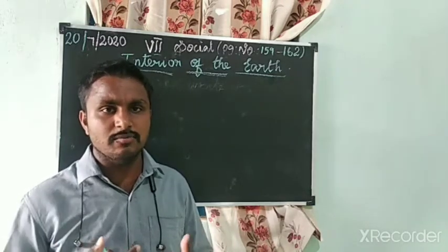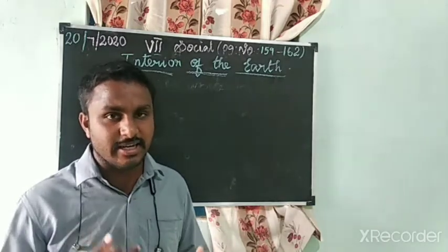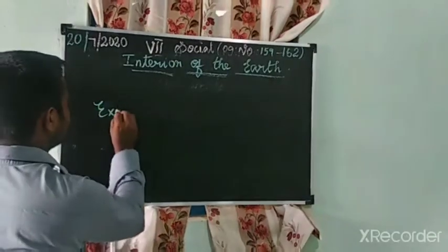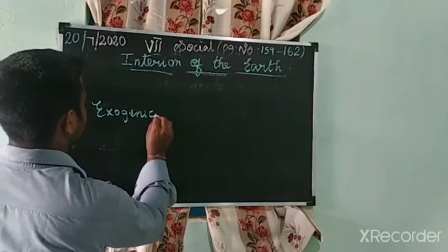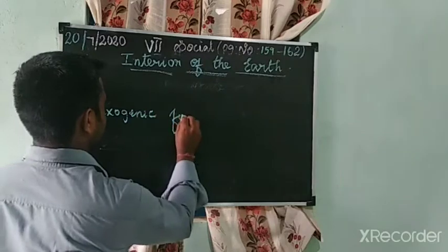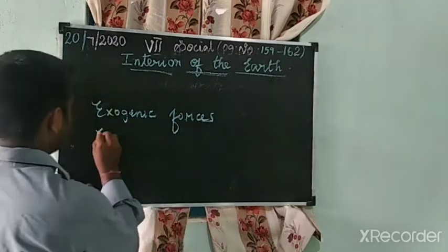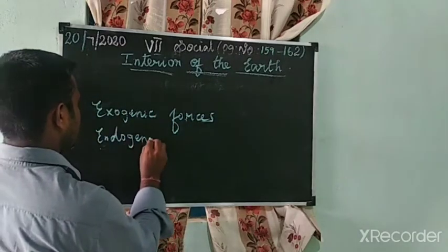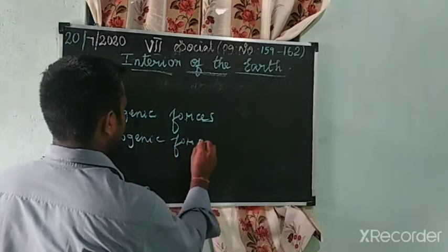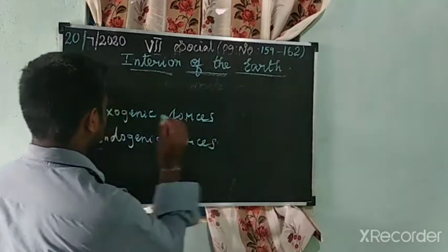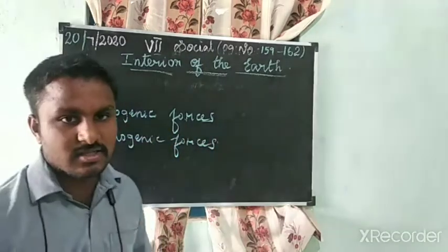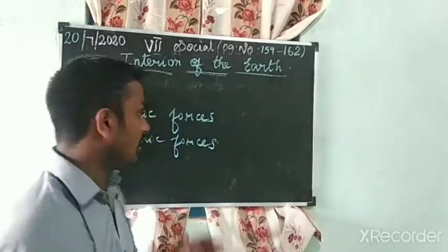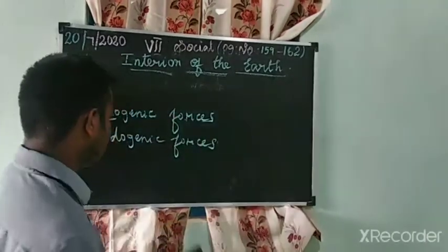Based on the movement of the plate, forces are divided into exogenic forces and endogenic forces. 'X' means external — changes that happen on the surface of the earth are called exogenic forces.